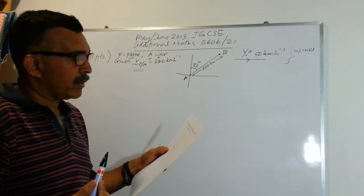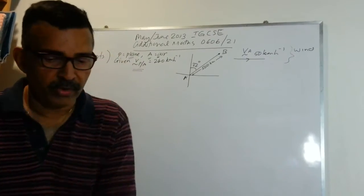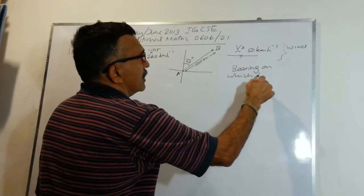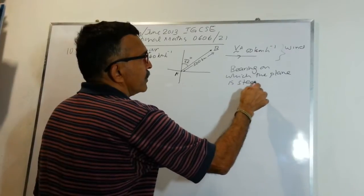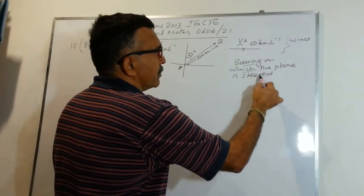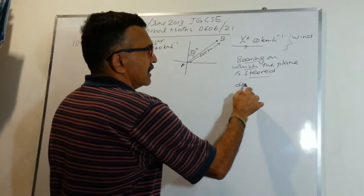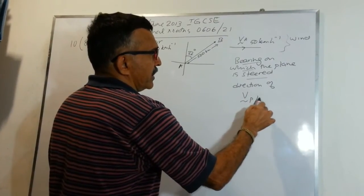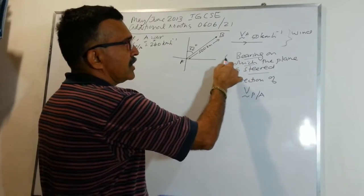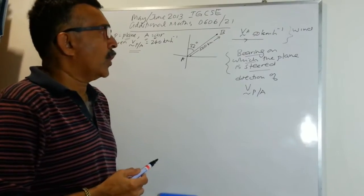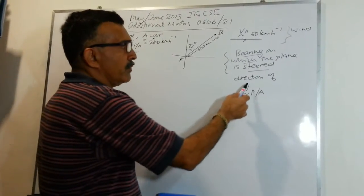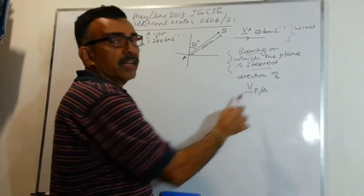Our question asks us to find the bearing on which the plane is steered. Concept-wise, when asked to find the bearing on which the plane is steered — or in some cases a boat is steered — we are looking for the direction of the velocity of P relative to A, that is, the direction of the relative velocity.